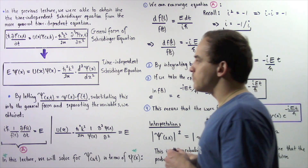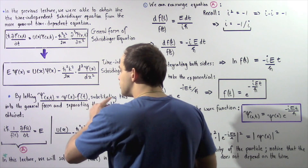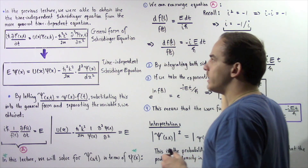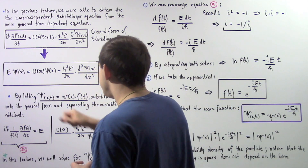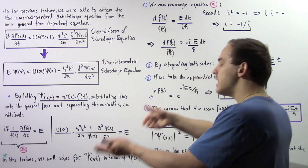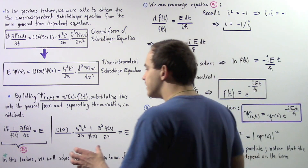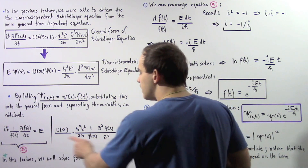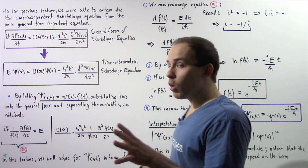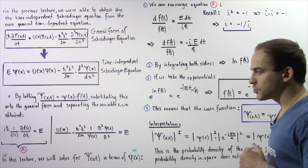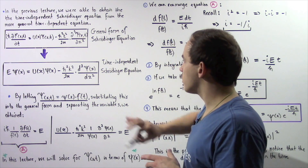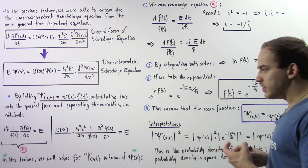What we basically did is use a mathematical relationship: we took that and plugged it into the general form of the Schrödinger equation. Then we divided both sides by that quantity and separated the variables, so that the left side has one variable and the right side has a second variable. We ended up with two equations where E is simply some arbitrary constant. If you're not certain, go back to the previous lecture and review what we did to get from the general form to this specific case.